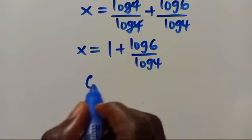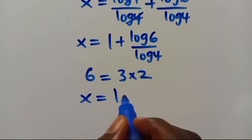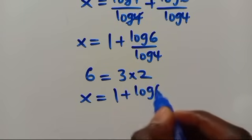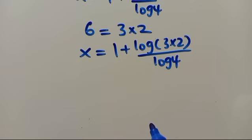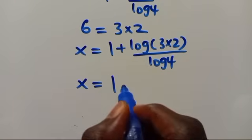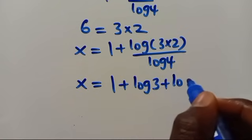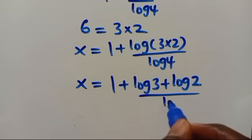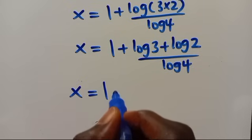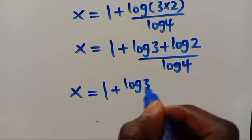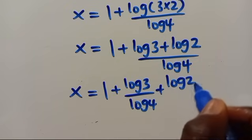Recalling that 6 can be written as the product of 3 times 2, we substitute to get X equals 1 plus log(3 times 2) over log 4. Applying the product rule again, this becomes X equals 1 plus (log 3 plus log 2) over log 4, giving X equals 1 plus log 3 over log 4 plus log 2 over log 4.